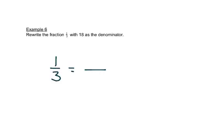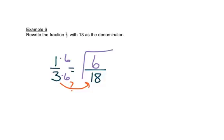In this problem, we want to write 1 third with a denominator of 18. To make it equivalent, we multiply or divide the top and bottom by the same number. We ask: what do we multiply 3 by to get 18? The answer is 6. So we multiply both top and bottom by 6: 1 times 6 is 6, giving us 6 over 18.